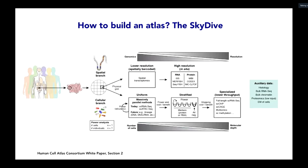How do we tackle the monumental challenge of building an atlas of very large, diverse humans with trillions of cells? We proceed on two parallel branches: the cellular branch, where we analyze individual cells, and the spatial branch, where we analyze cells in situ in their tissue context. In each, we progress through a balancing act of first taking a broad view — not every cell or detail captured — and then going into finer and finer views driven by information from the broader view. We call this strategy the skydive.